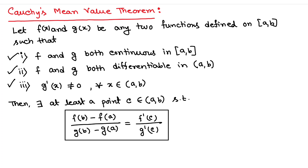So, to repeat: in Cauchy mean value theorem, both functions are continuous on [a, b], differentiable on (a, b), and the first derivative of g is non-zero on (a, b). If these three conditions hold, then there exists at least a point c in (a, b) such that this result holds.